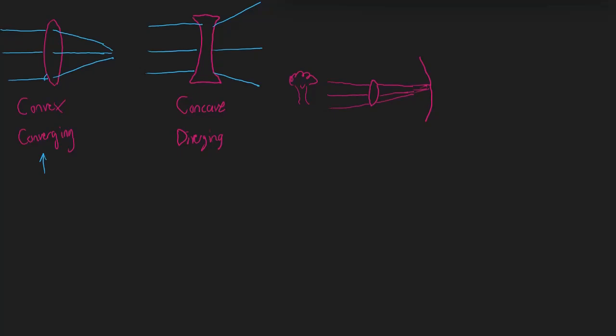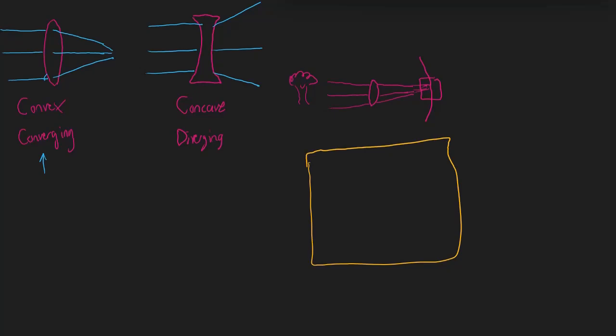Ultimately this is a physics concept, not a biology concept. But here's where it gets important: people often have a disorder where their eye is not able to focus light. Their lens may be unable to bend light far enough toward the retina. Let's zoom in on this part of the retina — one of two things is going to happen here.